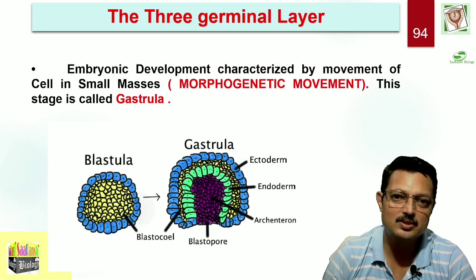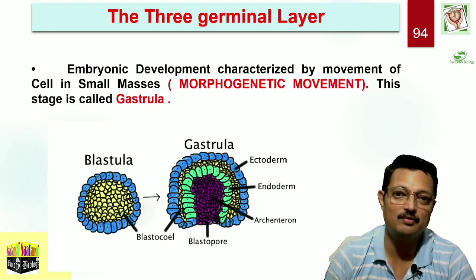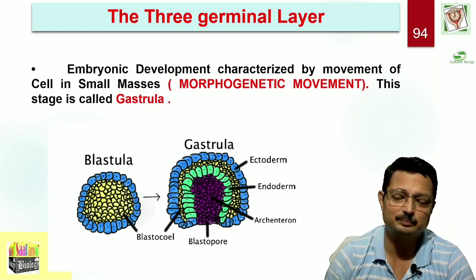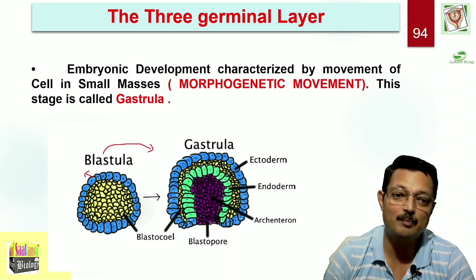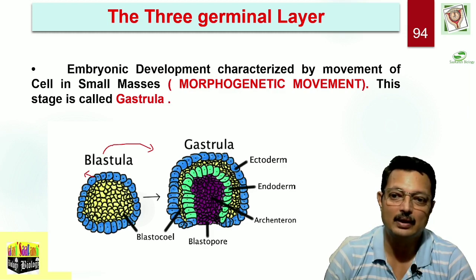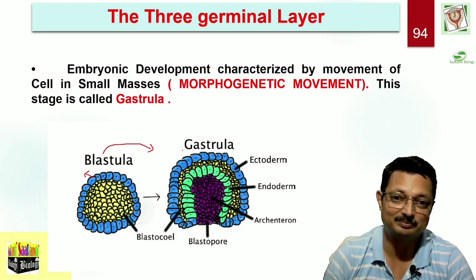Now, the blastocyst also undergoes some transformation. It is assured there will be no shortage of nutrients and there will be continuous supply of hormones to maintain internal constants. The blastula, which was made up of trophoblast cells and inner cell mass, now undergoes embryonic development characterized by the movement of cells in small masses — what we call morphogenetic movement. This stage we call gastrula, and as a result of this transformation, the primary germ layer is formed, after which organ formation will take place.